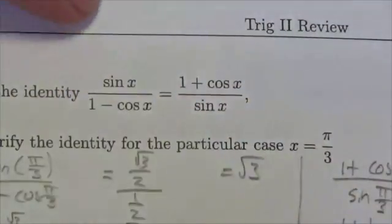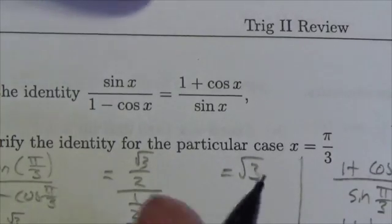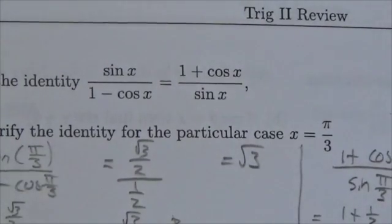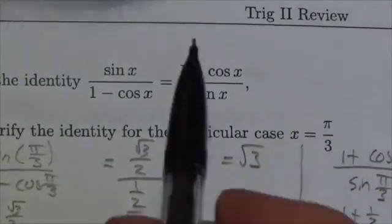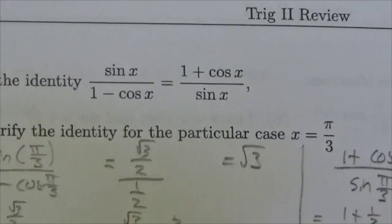Now when we take a quick look at this, the method that I've been trying to model for you as I was going through this review package here looks like this. First of all, I look at this and think, do I see any Pythagorean identities? No, I don't.